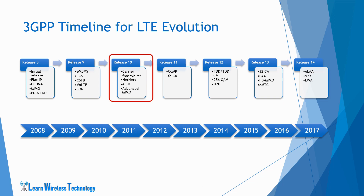The Release 10 version is also known as LTE Advanced. It is the first standard release that meets the actual LTE requirements that were defined. Carrier Aggregation and Advanced MIMO were the major features that helped increase data rates significantly. Features like HetNets and eICIC support improvement of capacity and coverage.